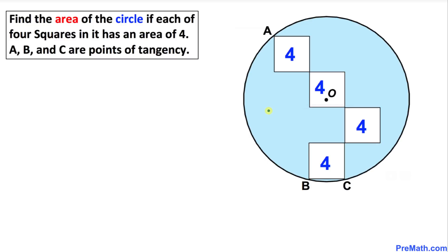Welcome to Pre-Math. In this video tutorial, we are going to calculate the area of a circle. As you can see in this figure, there are four squares inside this circle, and each square has an area of four. Points A, B, and C are our points of tangency. Let's go ahead and get started with our solution.